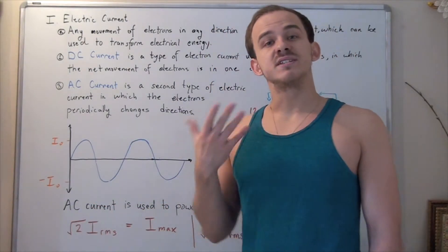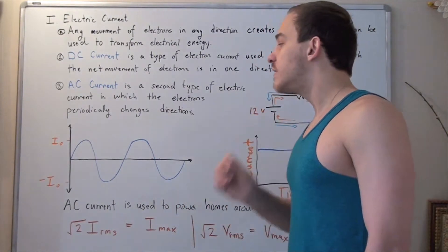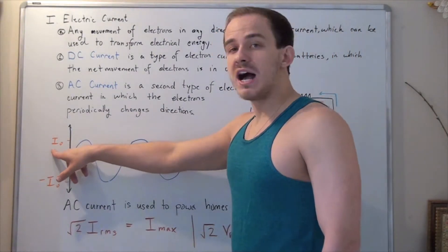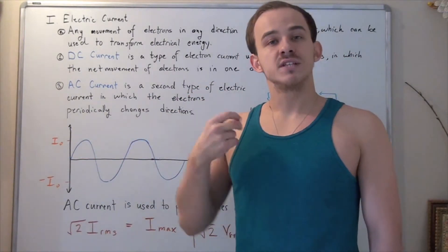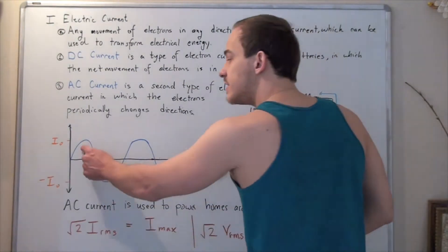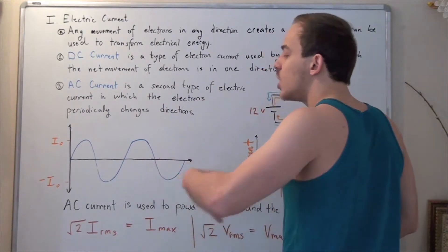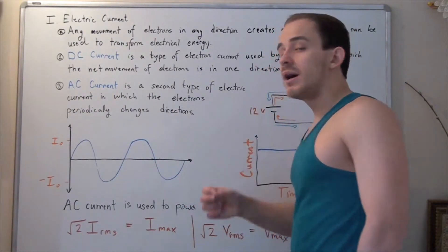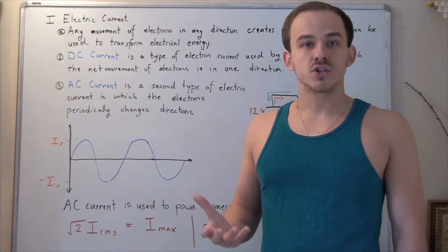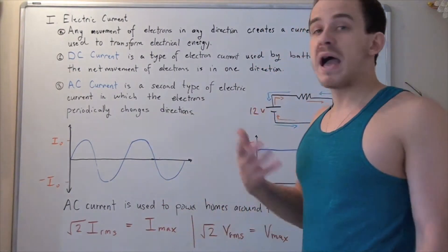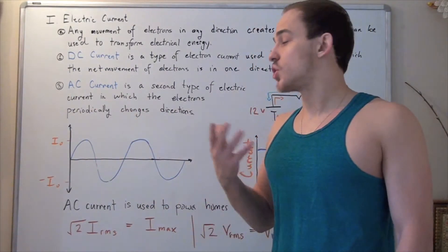The problem that electric companies have is the following: if they take the average of all the values of I — of our current — on this sine wave, we will get a value of zero. In other words, if we add the positive portion with the negative portion, we get zero. But electric companies want to charge us for something — they can't charge us zero for supplying AC current. They have to charge us something.